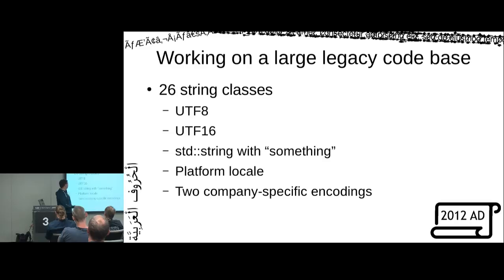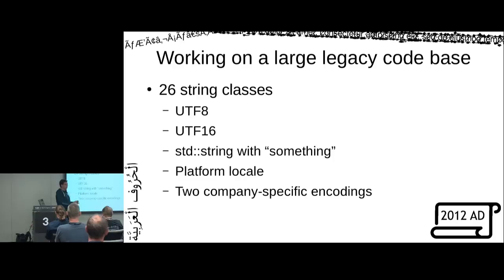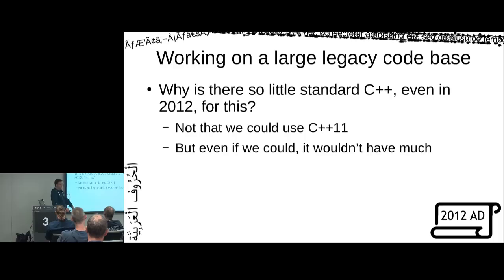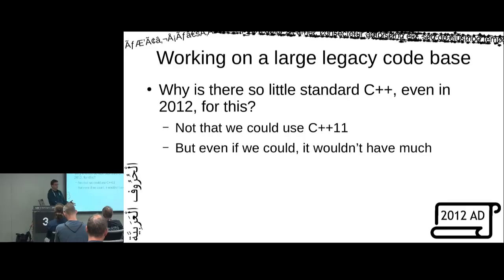At my corporate job I got entangled in strings — a codebase with 26 string classes: a couple UTF-8, UTF-16, company-specific ones, loads of transcoding back and forth, locale-specific platform stuff. So I'm back into Unicode. I realized: why is there so little C++ support for Unicode in 2012? We couldn't even use C++11 yet, and even if we could, it would only have had a UTF-16 string and a UTF-32 string with no useful methods for getting data in or out.